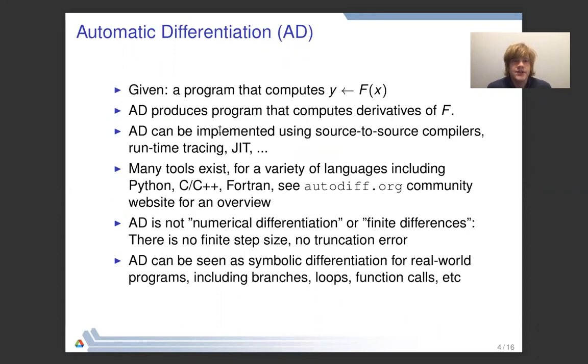Automatic differentiation works by taking a program that computes some function f, takes some inputs x and produces an output y, and AD takes a program like this and produces a new program that computes the derivatives of f. There are many ways of implementing AD, some of them are source-to-source compilation, runtime tracing, just-in-time compilation and many different and hybrid approaches. There are also a lot of tools that exist for many different languages including C, C++ and Fortran. These are probably the earliest that were out there and recently we are seeing a lot of new tools for Python, R, Julia and various domain specific languages. There's a community website at autodiff.org that tries to assemble most of these.